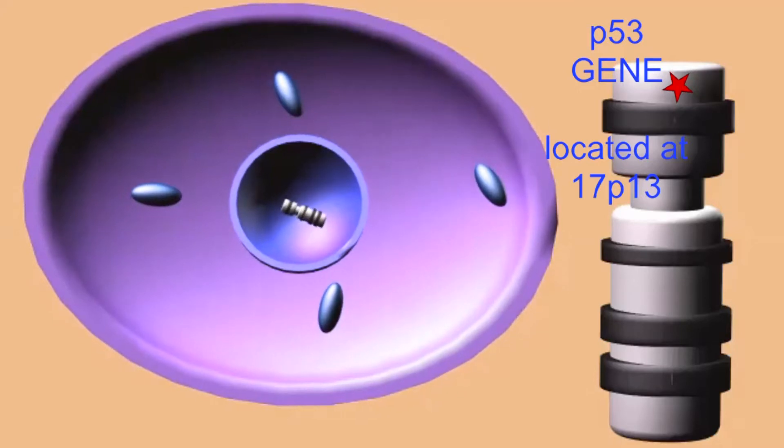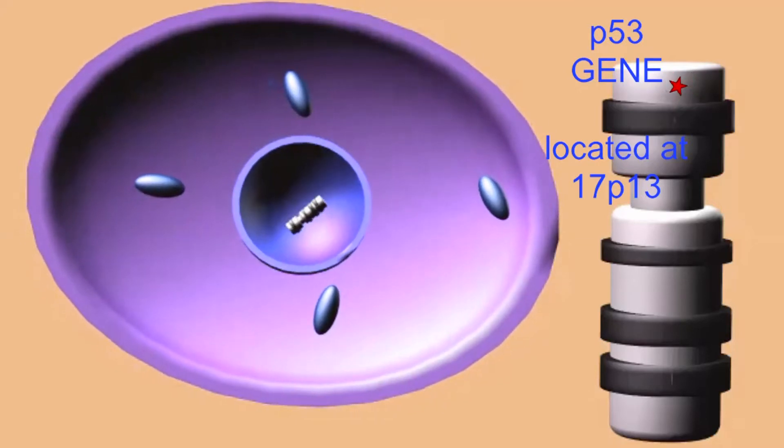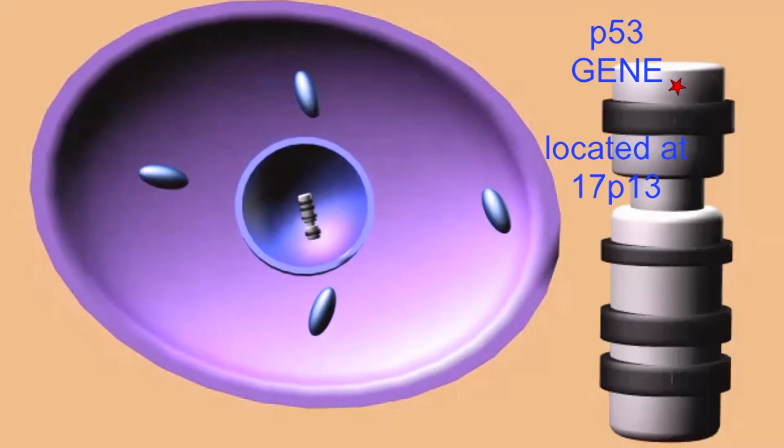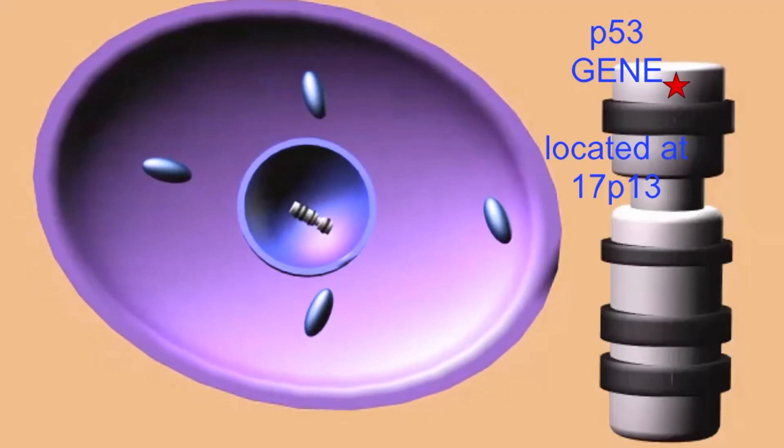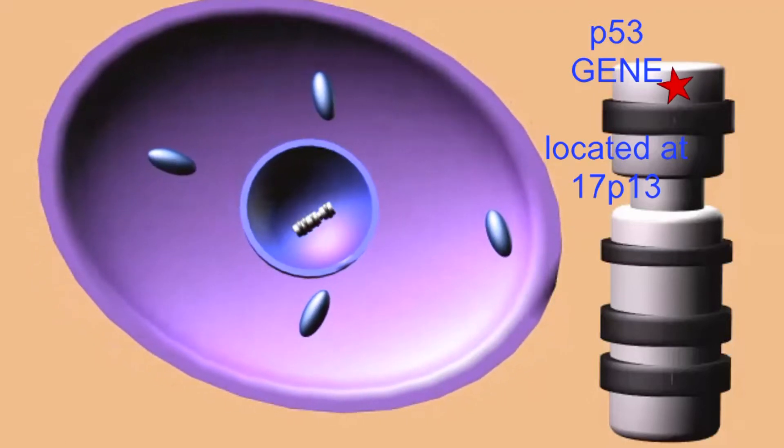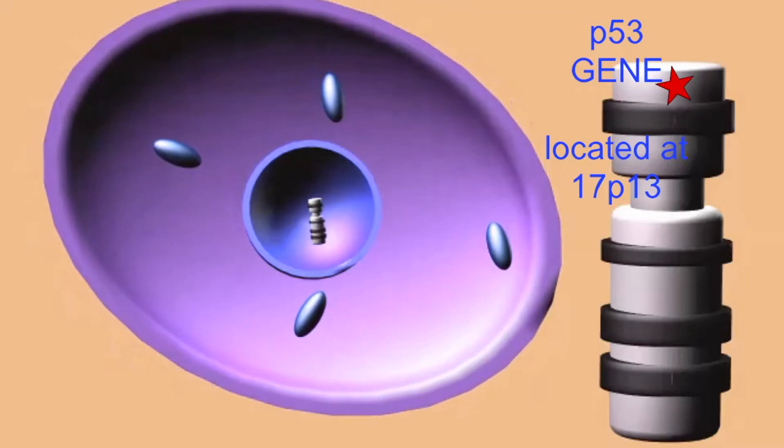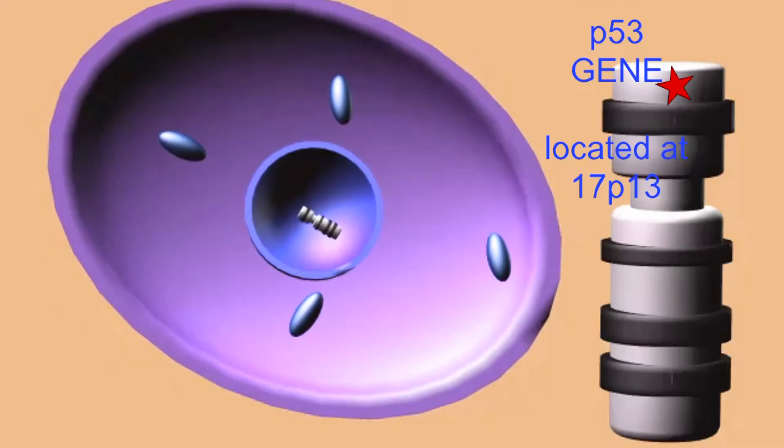The gene for the tumor suppressor protein P53 is located on chromosome 17 in the region P13 on the short arm of chromosome 17. P53 is one of the most important proteins which regulates the cell cycle and prevents cancer and inappropriate cell division.